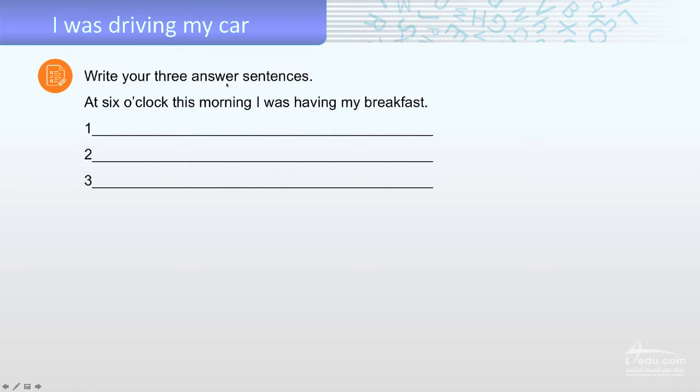Write your three answered sentences. Give you an example. Use the past progressive, don't forget. At 6 o'clock this morning, I was having my breakfast. This example. Now you have to do three, I'll give you one.